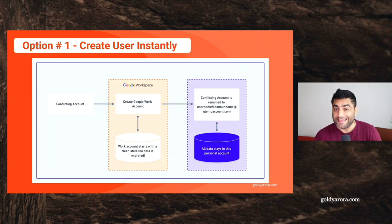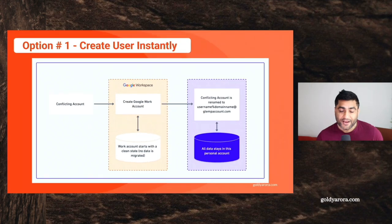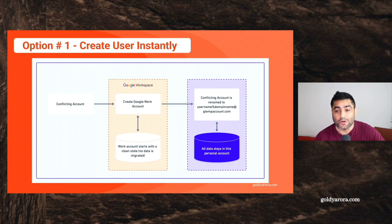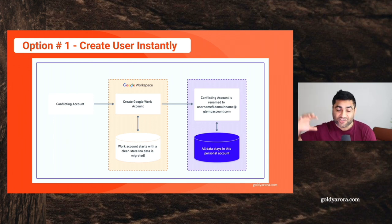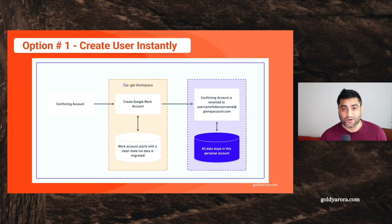The second option is that you can send this person a transfer email request. Let's talk about the first option, which is to create the user account instantly. In the example we've been working on, I can go ahead and create the user jason@goldera.com right now. But if I do, there are a few things to be aware of: this account will be created as a work account in my Google Admin Console, and it will not have any of the data that Jason had in that personal account.